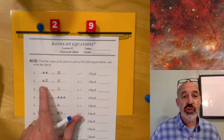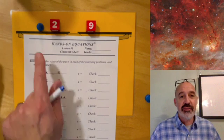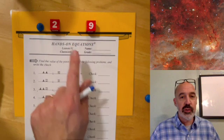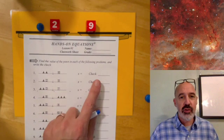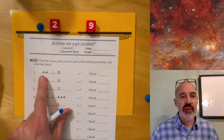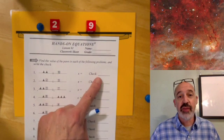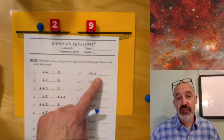Problem number two shows pawn plus two equals nine, and I have it set up here on the board. Before I go there, the check over here is where you would plug in the fact that five plus five is ten, so here you just write ten equals ten. That's the check, that's the balance.